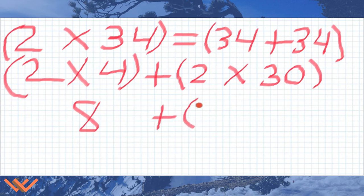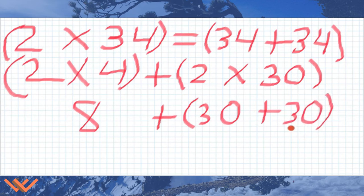So we can have 8 plus, and then we have 2 times 30. Well, that is still equal to 30 plus 30. And there's your decade doubles. So if you recall, if we're just looking at it as if it's a 3, 3 and 3 make 6, but since it's 30 and 30 make 60. So we can put down here 60. Let's bring all this down. So 8 plus 60 is equal to 68.